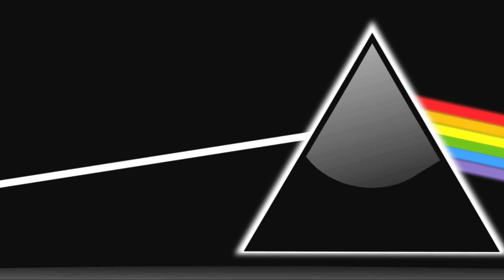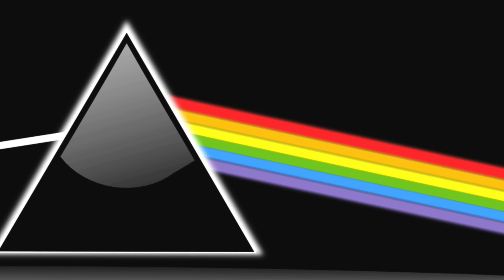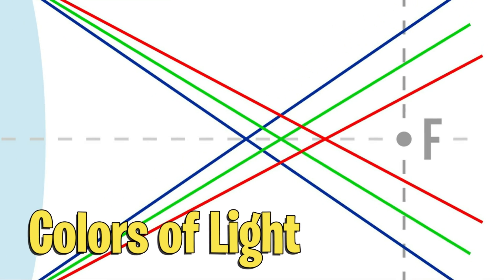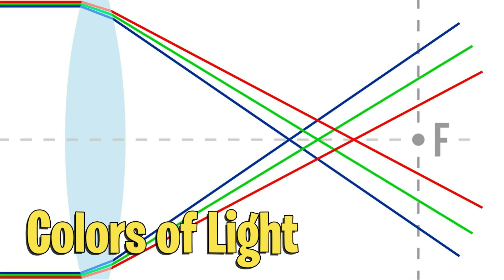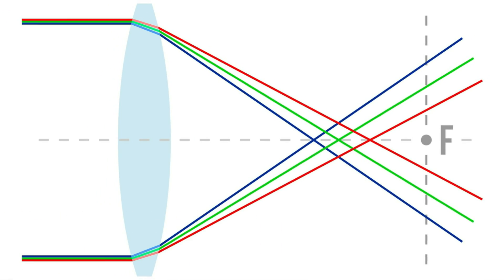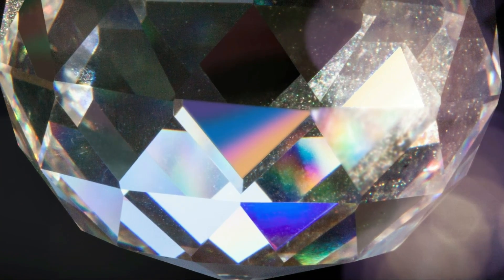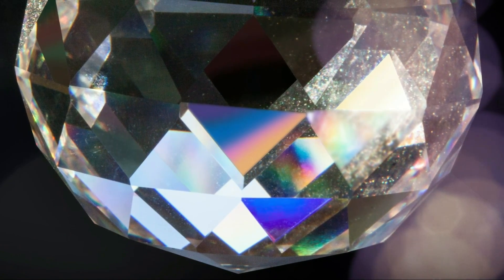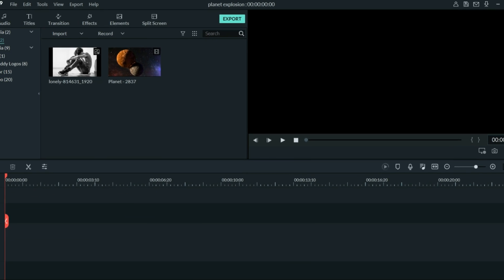The easiest way to understand what chromatic aberration is, is just that the different colors of light tend to propagate at different speeds. They have different wavelengths, and so they tend to refract differently, especially through certain lenses. You've probably seen this any time light has gone through a crystal and you get kind of a rainbow effect. But I'm not a scientist, I'm just here to show you how to do this effect in Phil Morrow.